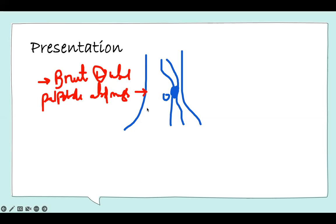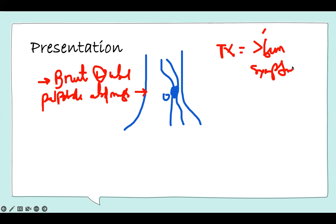Most of them are asymptomatic. We do surgery on them if they are greater than six centimeters in diameter, or if the patient has symptoms. So these are the two indications: either the patient has symptoms, or the aneurysm is about six centimeters in size. If the diameter is six centimeters, we need to do surgery.